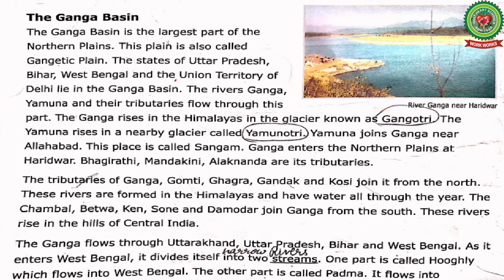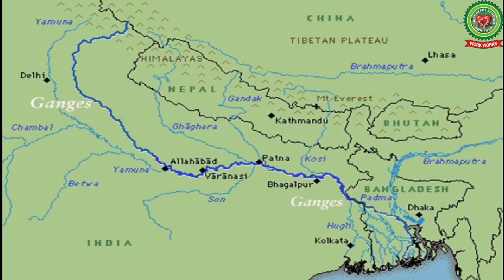Reading from the book: The Ganga basin is the largest part of the northern plains. This plain is also called the Gangetic plain. The states of Uttar Pradesh, Bihar, West Bengal, and the Union Territory of Delhi lie in the Ganga basin. So the Ganga basin covers the largest part of the northern plains and is also known as the Gangetic plain.